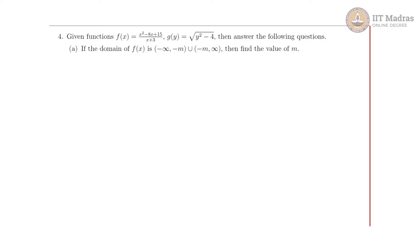For our fourth question we are given two functions f and g. The questions, parts a and b, are based on the given information. Let us solve the first part a. It is saying that if the domain of f is (-∞, -m) ∪ (-m, ∞) then find the value of m.